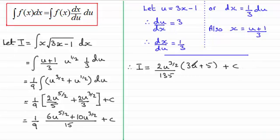Now I can substitute back in for u. So we end up with 2 times u. u is 3x minus 1, so we've got 3x minus 1, all to the power 3 over 2.